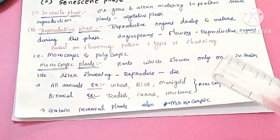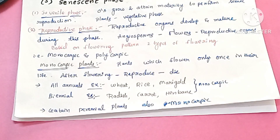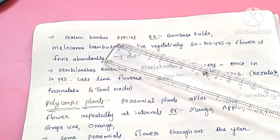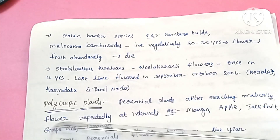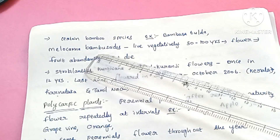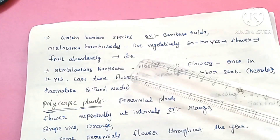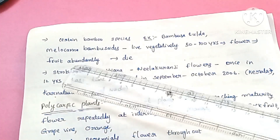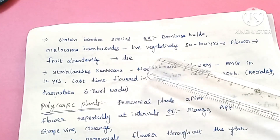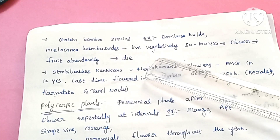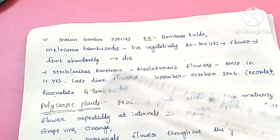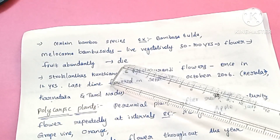There are also perennial plants in a monocarpic condition. For example, bamboo species such as Melocanna bambusoides live vegetatively for 50 to 100 years in the vegetative phase. After that, they produce flowers, bear fruit abundantly, and finally die. These are monocarpic perennial plants.